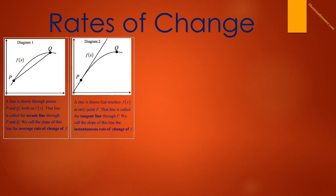We have the same setup as we had in diagram one, but now we draw a line that touches f of x at only point P. We'll call that line the tangent line through P. The slope of this line will then be called the instantaneous rate of change of f.